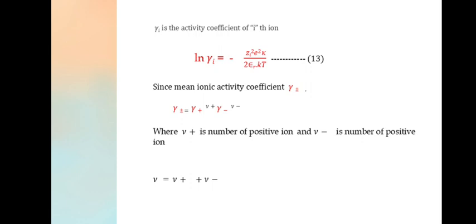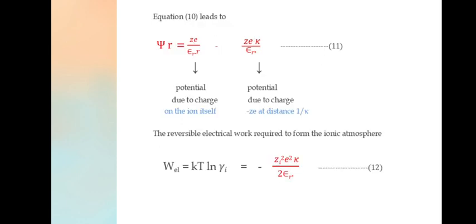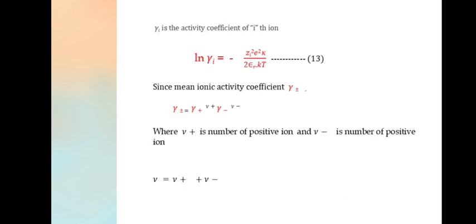γi is the activity coefficient of the ith ion. ln(γi) = -Zi²e²κ/(2εRkT).